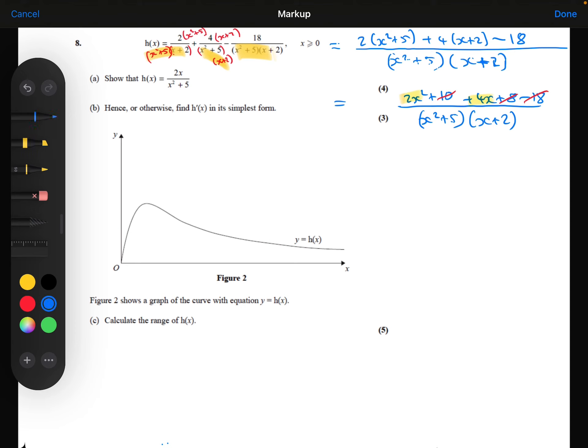And then I notice that I'm just left with the 2x squared plus 4x. Now I can factorise 2x outside of that. So I get 2x times x plus 2.